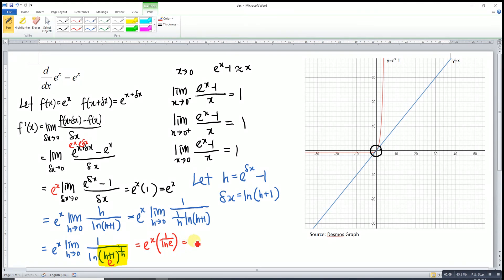1 over ln(e) means that 1 over 1 because ln(e) is 1. So e^x times 1, we get e^x. Then we prove. That's all for today. Thanks for watching. Hope you liked it. See you.